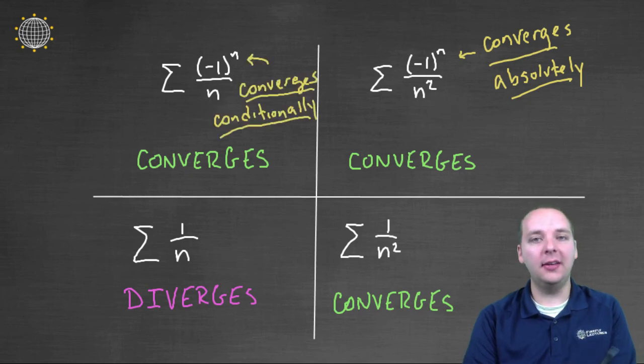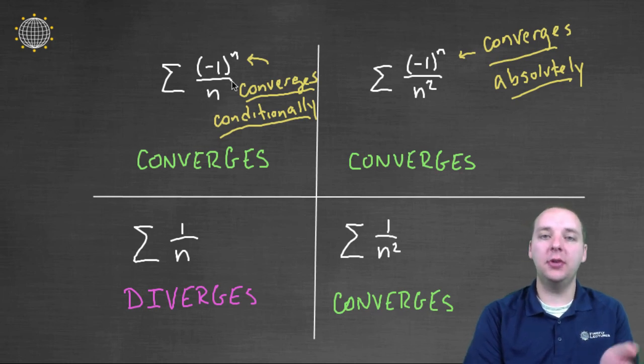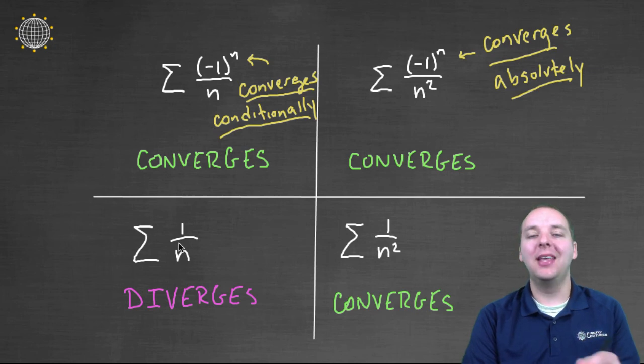But on the other hand, this term, (-1)^n over n, converges conditionally, meaning on the condition that it has terms that alternate. The original series does converge, no doubt, but when you take away the terms that alternate, it no longer converges anymore. So hopefully that helps you understand the idea of absolute convergence and conditional convergence just a little bit better.